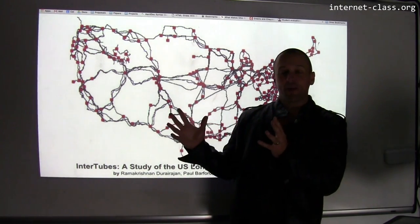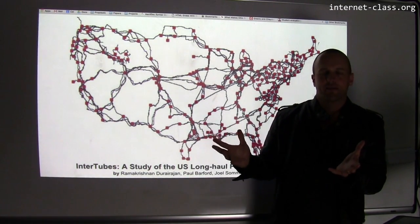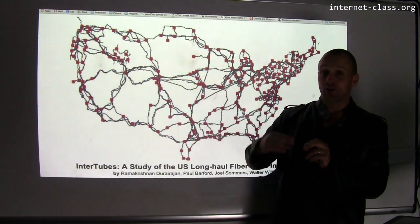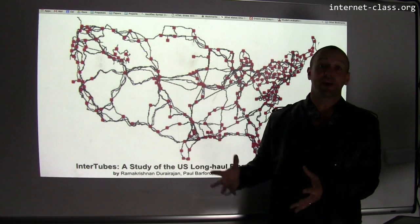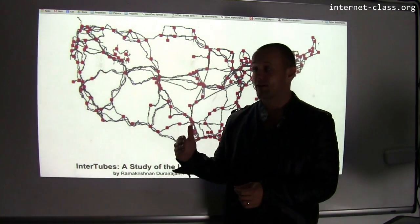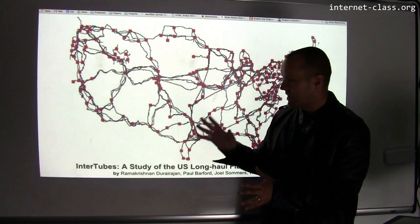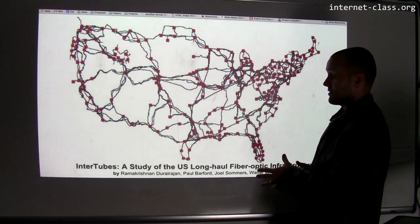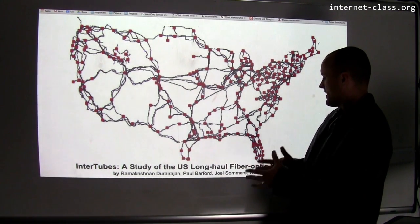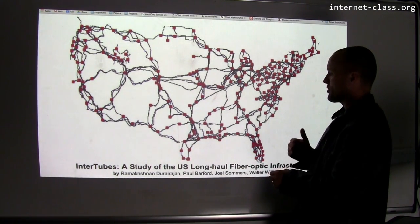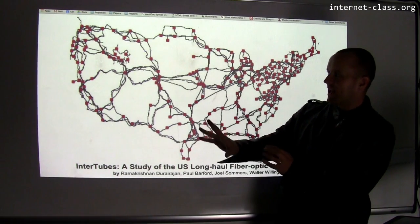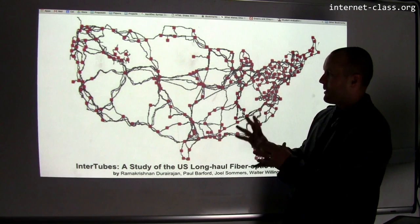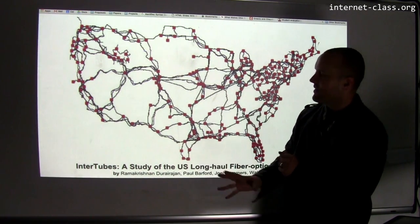Despite the fact that we maybe make fun of the term 'information superhighway,' the information superhighway actually crosses some of the same highways and trade routes we set up to move other things. Here's an example: this is from a 2015 paper called 'InnerTubes: A Study of US Long-Haul Fiber Optic Infrastructure,' done by a series of researchers, and here is the map they came up with showing the really long-haul high capacity fiber optic links within the United States.